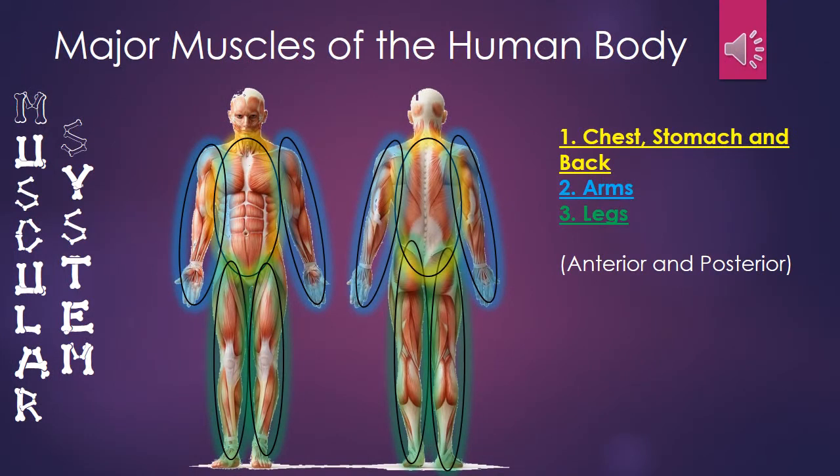Skeletal muscles are normally associated with strength and fitness. In order to discuss the major muscles of the human body, we will divide them into four parts: the chest, stomach, and back, arms, and legs. When appropriate, they will be shown in an anterior and posterior view.